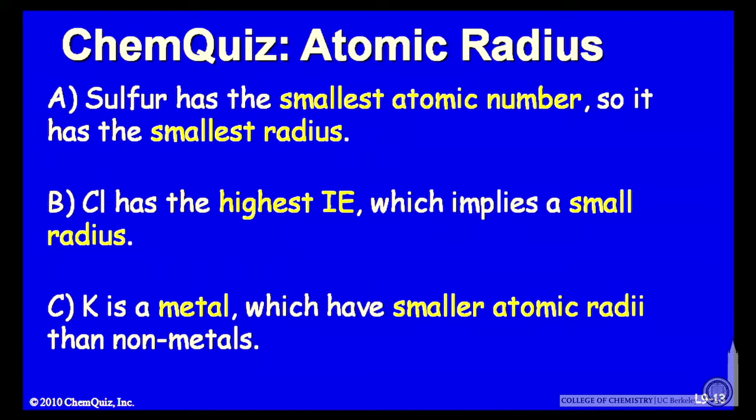Some possible arguments for each answer: A — sulfur has the smallest atomic number, so it should have the smallest atomic radius. Or B — chlorine has the highest ionization energy, which implies a small radius. Or C — potassium is a metal, which have smaller atomic radii than nonmetals. Think about those possible three explanations and make another selection.